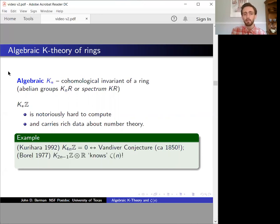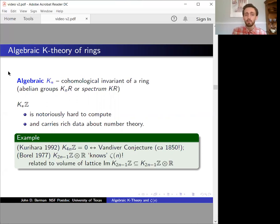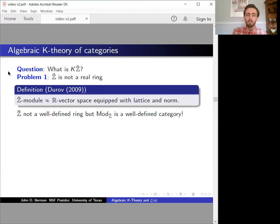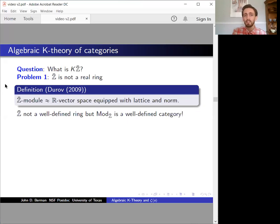On the other hand, the odd degree K-theory of Z is known, but remarkably it contains information about the values of the Riemann zeta function. The relationship involves calculating the volume of K_{2n-1}(Z) as a lattice inside the vector space K_{2n-1}(Z) tensor the reals. I'd like to compute the K-theory of the Arakelov compactification of Z. The problem is that the Arakelov compactification is not a well-defined ring or even a scheme. However, there is a good notion of a module over this Z-bar — a module is something like a real vector space equipped with a lattice and a norm.